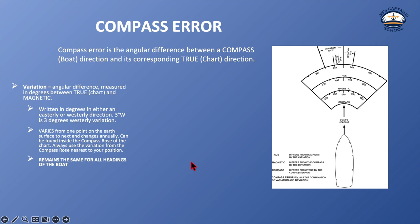Compass error is the angular difference between a compass course or compass bearing and its corresponding true direction. Think of compass as what you use on your boat, and true as what you use when you put bearings on your chart.